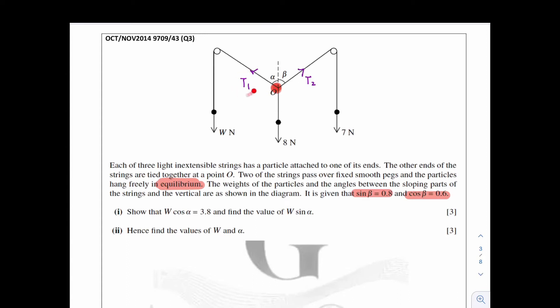For now, let's figure out what is T1. Look at this string here, it's connected to the w newton. This particle is being pulled downwards by the w newton. But at the same time, it's being pulled upwards by the string, which means the tension here is actually equal to w. Because this particle is not moving up or down, it is in equilibrium. So the upward force should be equal to the downward force. So T1 is equal to w newton.